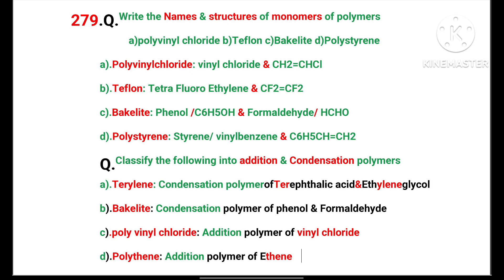Classify the following polymers into addition and condensation polymers. This also covers monomers of the respective polymers. Terylene is a condensation polymer of terephthalic acid and ethylene glycol. Bakelite is a condensation polymer of phenol and formaldehyde. Polyvinyl chloride is an addition polymer of vinyl chloride. Polyethene is an addition polymer of ethylene.